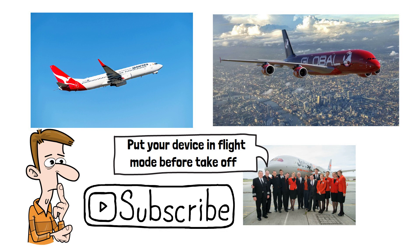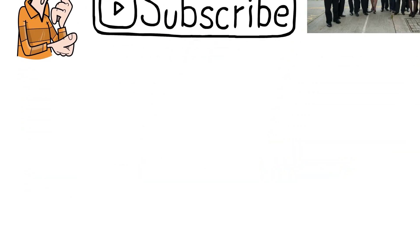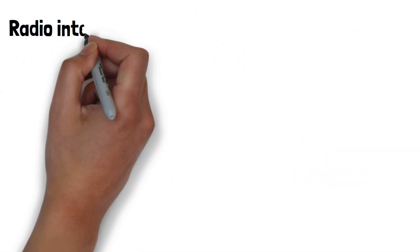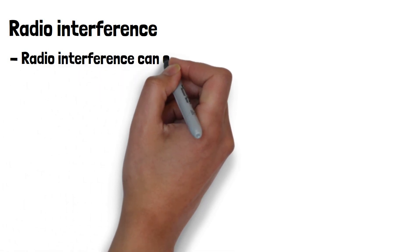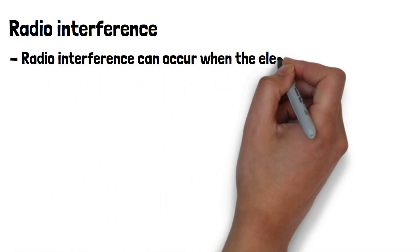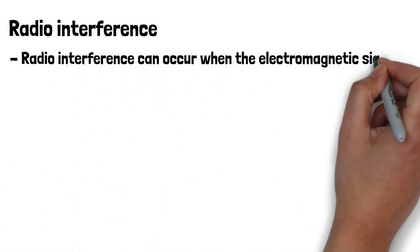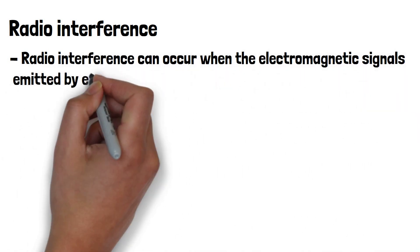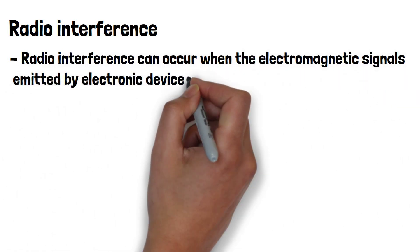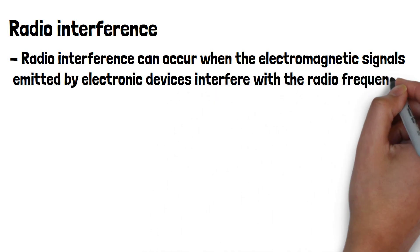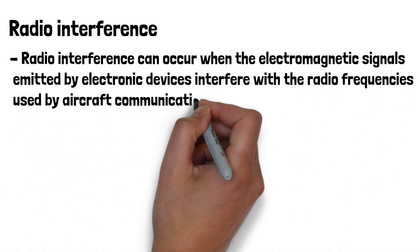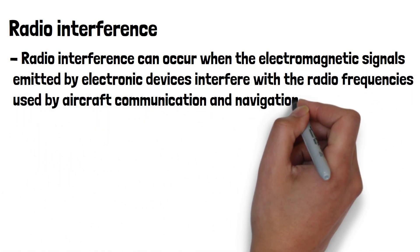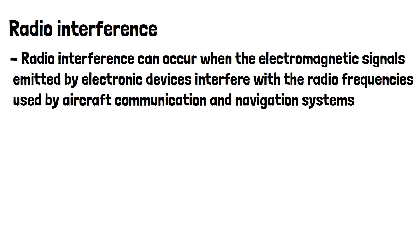The main reason they ask you to put your device in flight mode is radio interference. Radio interference can occur when the electromagnetic signals emitted by electronic devices interfere with radio frequencies used by aircraft communication and navigation systems.